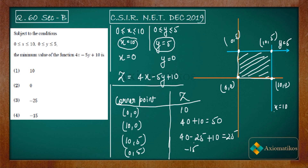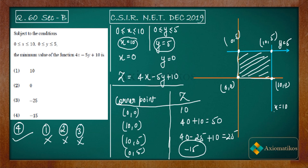From the theorem of LPP, the minimum or maximum lies on the corner point. Therefore (0, 5) is the point at which you get the minimum value of minus 15, making the fourth option true and all other options false. If you have any doubt, ask in the comment section. You can also join our WhatsApp and Telegram groups — links are in the description. Thank you.